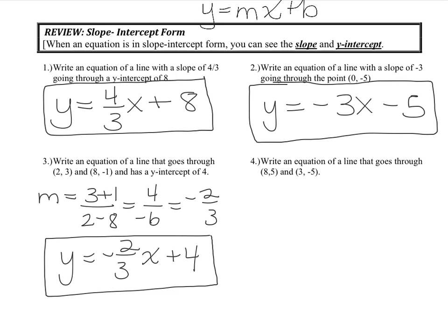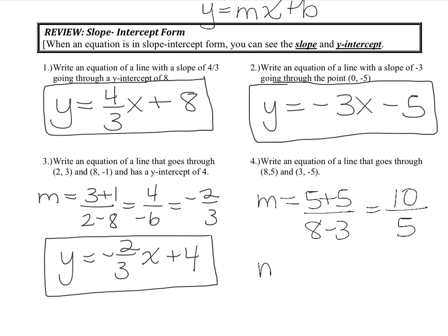When we get to number 4, you're given two ordered pairs, so I have to find the slope. On the top I've got 5 minus negative 5, which is 5 plus 5, and then 8 minus 3. That gives me 10 over 5, which is 2. So the slope is 2. However, I don't know the y-intercept, and the only way to find it right now would be to graph it.